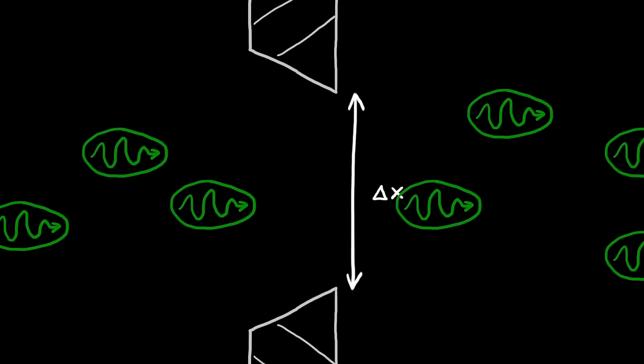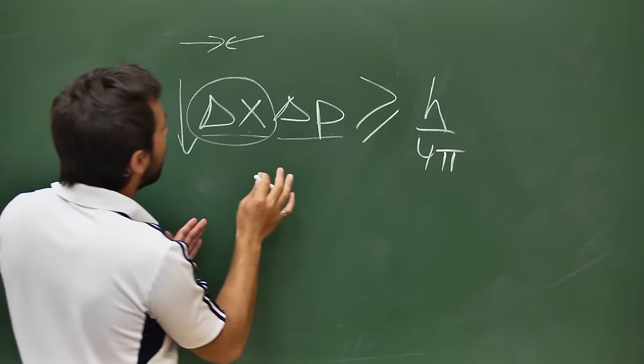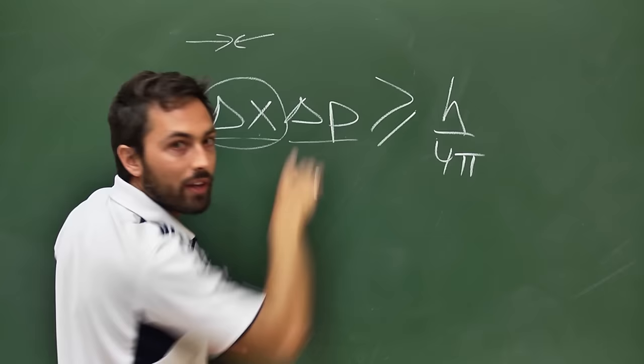But as we narrowed the slit, we were decreasing delta x for those photons. So we were getting more and more precise about where the photons were passing through that slit. And at a certain point, you come to this limit. So that if you narrow this any further, you're going to break this uncertainty relationship.